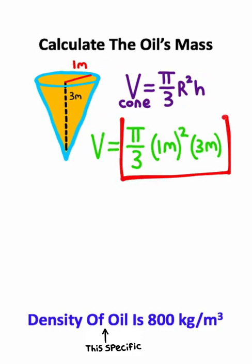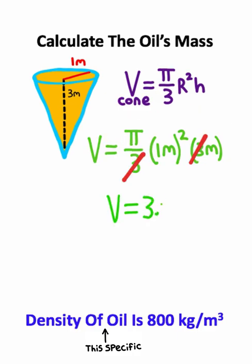I'll multiply all these numbers and units, and I'll approximate pi to be about 3.14. So I'm going to have a volume of 3.14 cubic meters approximately.